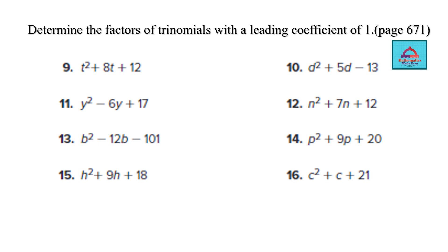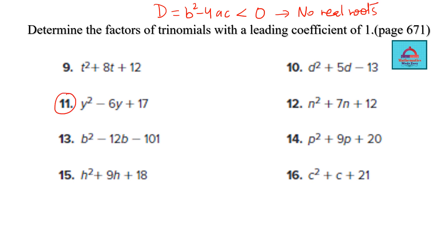For some questions, there will be no real roots. Check the discriminant using the formula D = b² − 4ac. If D < 0, there are no real roots. For question 11, b = −6, a = 1, c = 17: D = 36 − 68 = −32, which is negative, so no real roots — no solution.